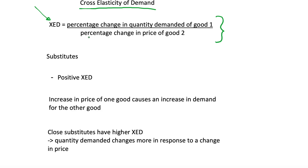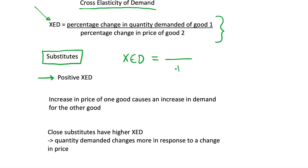Looking at this equation, how are we going to know what values of XED indicate substitutes and what indicate complements? Substitutes are going to have a positive cross elasticity of demand. If we consider a positive change in price of good two — that is, the price of good two increases — and we plug that into our equation, we then consider the percentage change in quantity demanded of good one, which also shows a positive change. So an increase in price of good two has caused an increase in quantity demanded of good one.